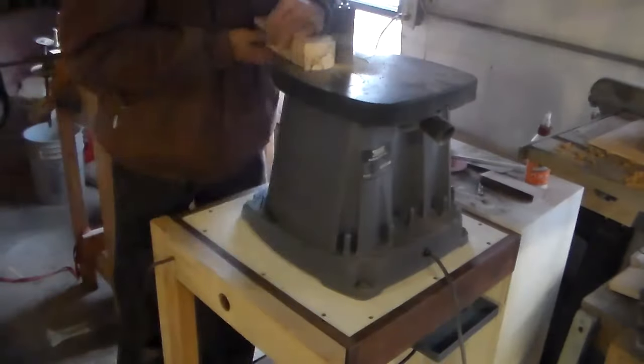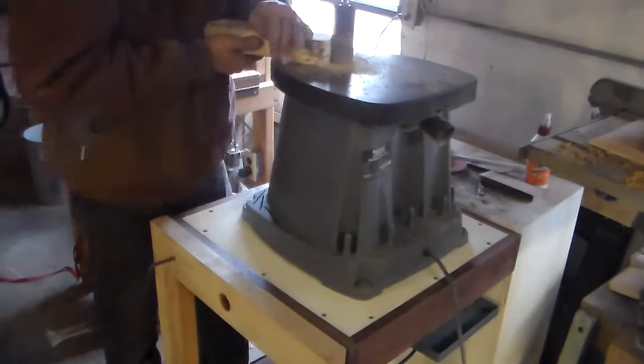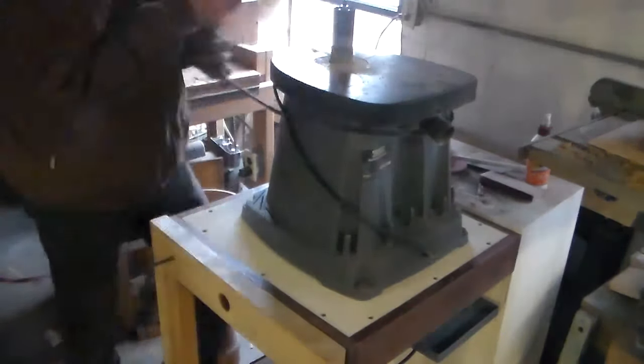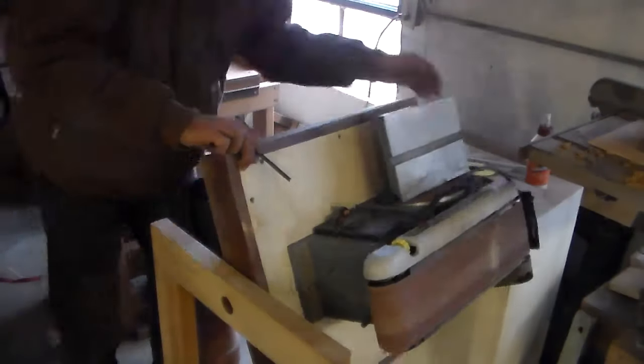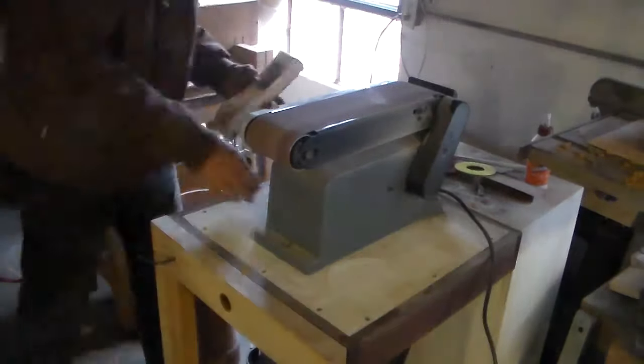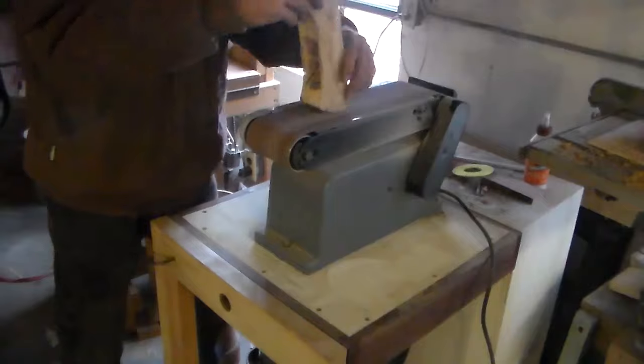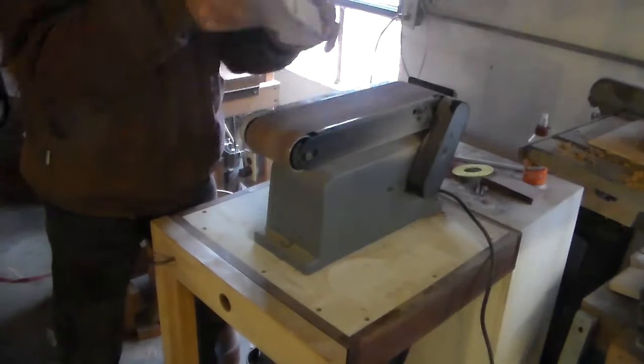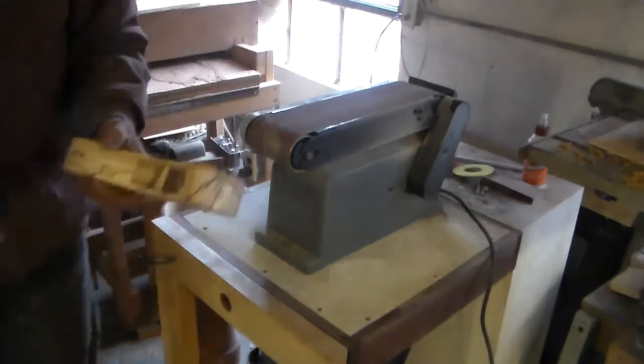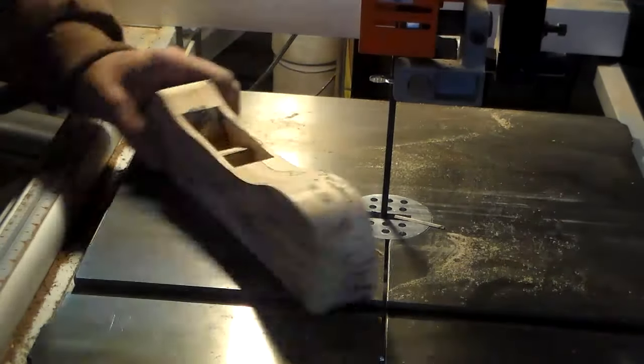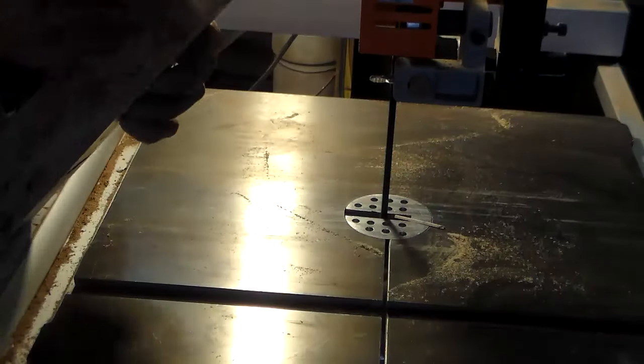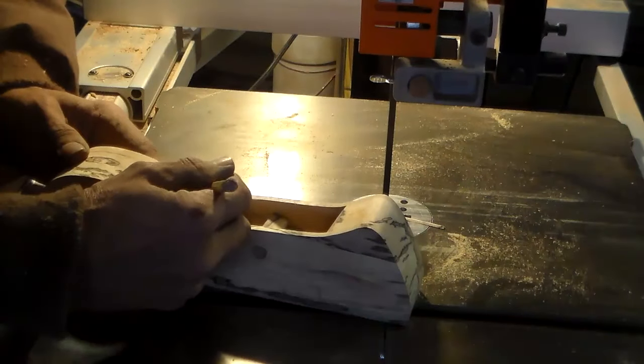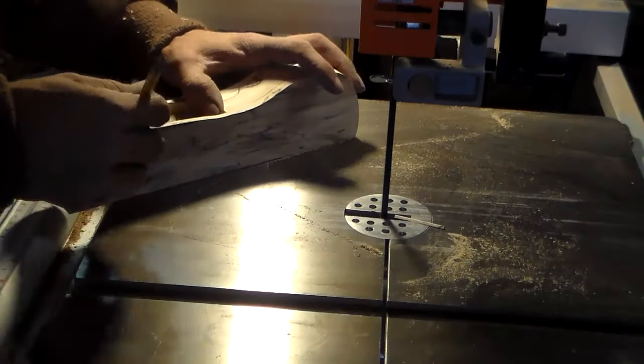The inside curves are a little easier to sand on the spindle sander so I flipped it over and did that. Then I ended up flipping back over and using the belt sander also. This flipping cart that I made is really quite handy, it takes just a second to switch out sanders. In case you've missed it, I did make a video of making the flip cart.